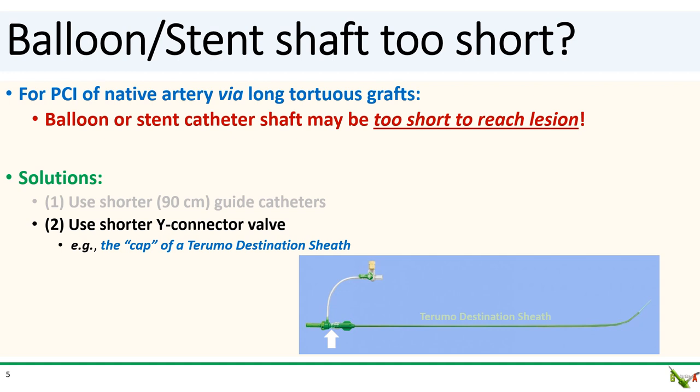If you don't have a short guide catheter in the right shape, another solution is to reach for a shorter Y-connector valve — this will buy you a couple of centimeters. For example, you can use the cap of a Terumo Destination sheath, which is shown here. This is an extremely short wide connector valve, but you do have to be careful not to entrain air during exchanges of equipment, because this valve does not easily bleed back via its hemostatic cap — you'll have to bleed back via the side port.